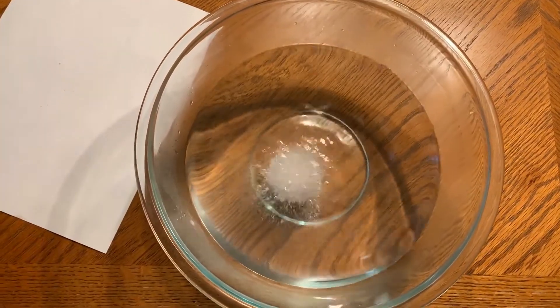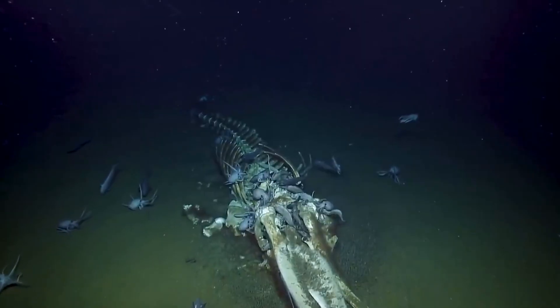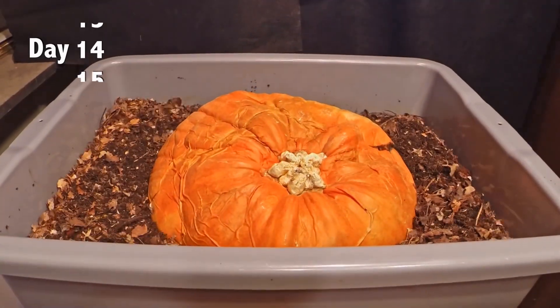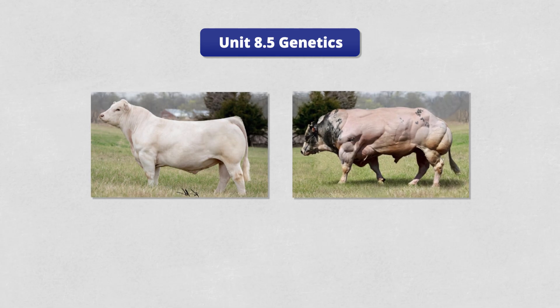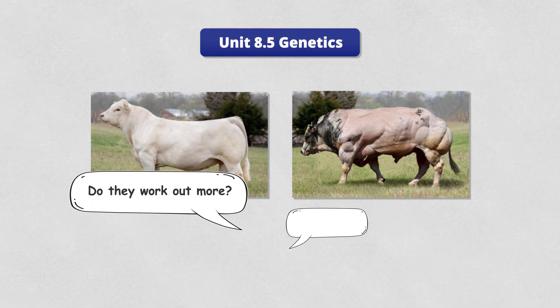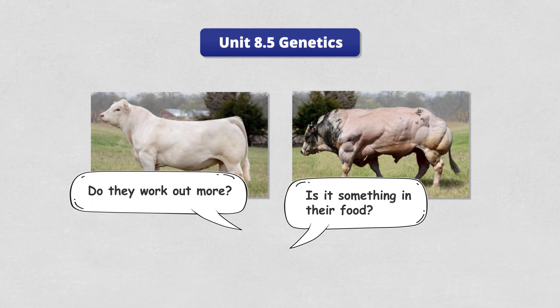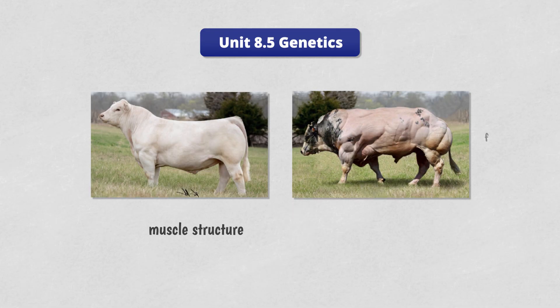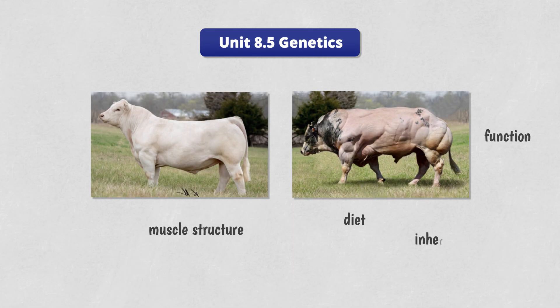It's not that we throw out the science content — it's that we build the journey around what students genuinely want to figure out. In unit 8.5, for example, students see cattle with unusually large muscles. Students ask questions like: Do they work out more? Is it something in their food? And those questions guide investigations into muscle structure, function, diet, and eventually inheritance. They're not just learning about genetics — they're figuring it out.